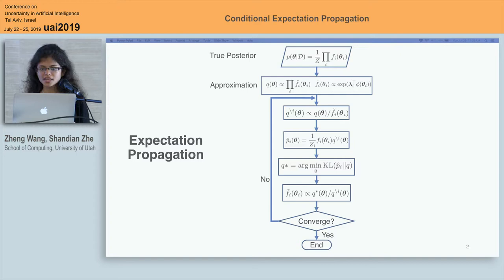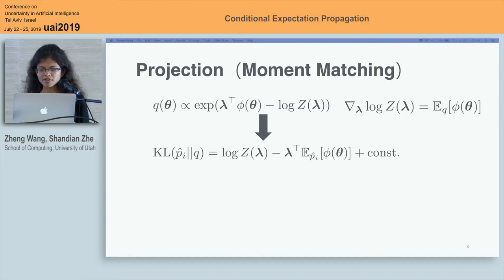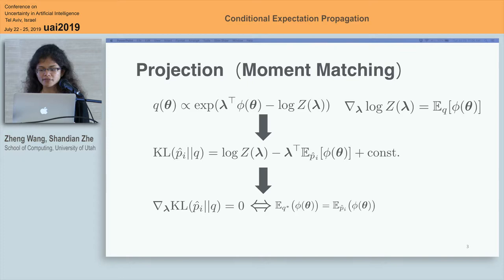In fact, these procedures can be summarized in three basic steps: message deletion, projection, and update. The projection step is the most important step, which is fulfilled by moment matching. Because the approximation is a member of the exponential family, there is a well-known conclusion that the minimization of KL divergence is equivalent to matching the expected value of sufficient statistics between the approximate distribution and the true distribution. It is also called moment matching because the expectation can always be identified by the moment of the distribution.